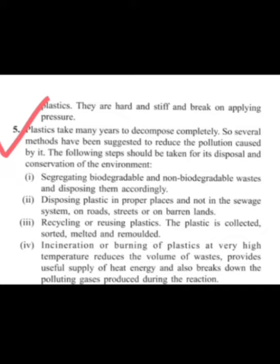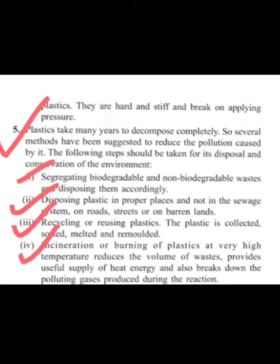Plastics take many years to decompose completely, so several methods have been suggested to reduce the pollution caused by them. First, segregate biodegradable and non-biodegradable waste and dispose of them accordingly. Second, dispose of plastic in proper places and not in the sewage system, on roads, streets, or barren lands. Third, recycle or reuse plastic — it is collected, sorted, melted, and remolded. Fourth, incineration or burning of plastic at very high temperature reduces the volume of waste, provides a useful supply of heat energy, and also breaks down the polluting gases produced during the reaction.